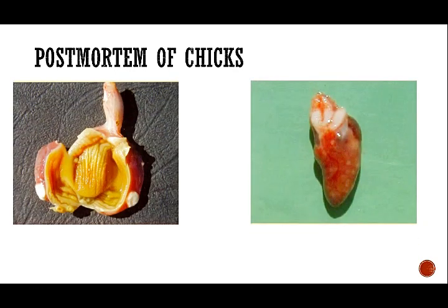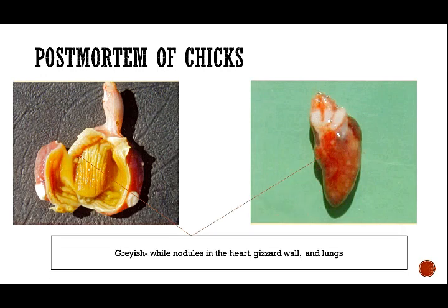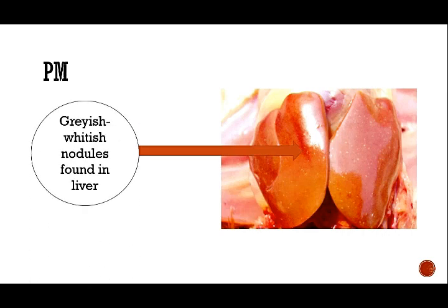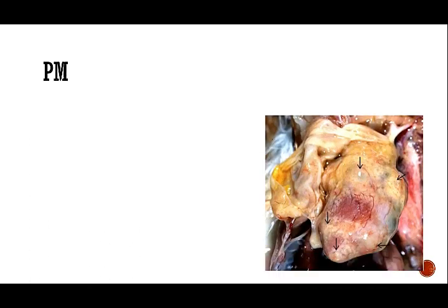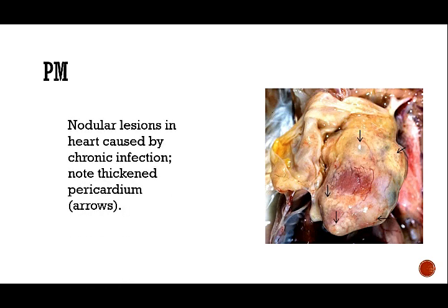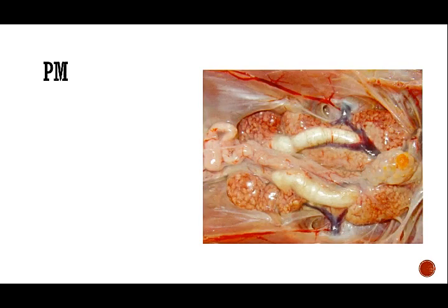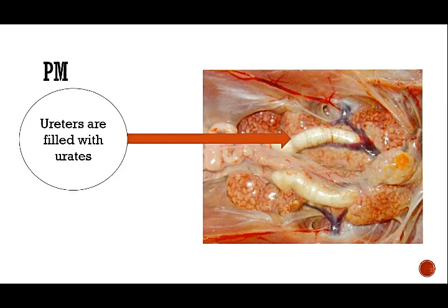In the post-mortem examination, the gizzard reveals grayish-white nodules, as indicated by the arrows. The lungs and liver also show grayish-white nodules. In chronic cases, the pericardium of the heart will be thickened by nodular lesions. Another prominent feature is that the ureters are filled with urates, which is responsible for the white diarrhea observed clinically.